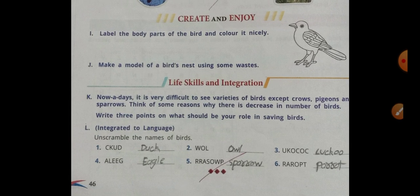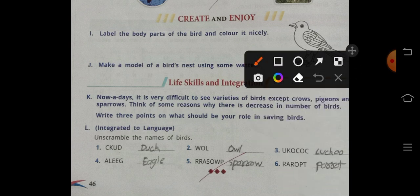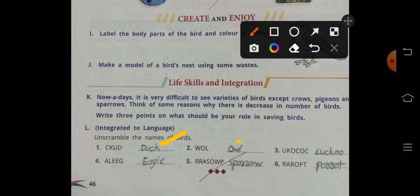Here it is, unscramble the names of the birds. The first one is duck, cuckoo, eagle, sparrow, parrot.